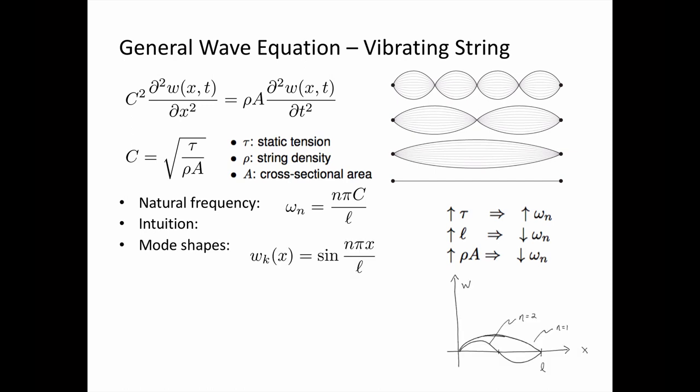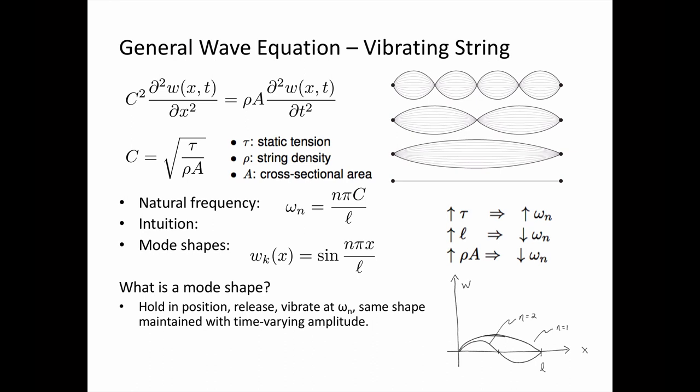Mode shapes are important for vibration analysis. We can describe the mode shapes for a vibrating string using this equation. One way of understanding what a mode shape is: if we were to take the string and hold it in the exact position of one of its mode shapes and release it, the string would vibrate at the corresponding natural frequency and maintain this shape — the magnitude would vary with time. This kind of behavior, mathematically, is very similar to solving for stable buckled shapes in columns under compression, and solving for the critical load that would cause buckling.